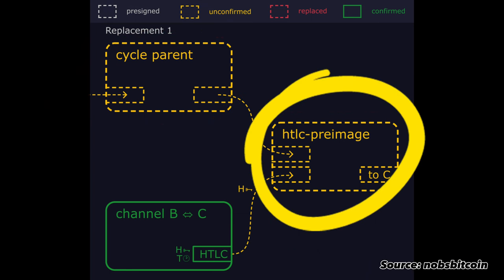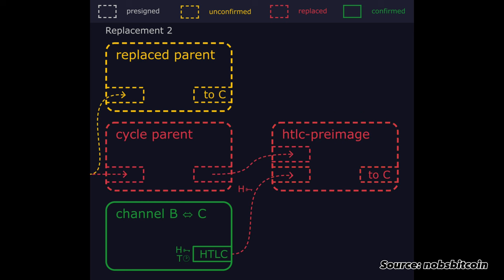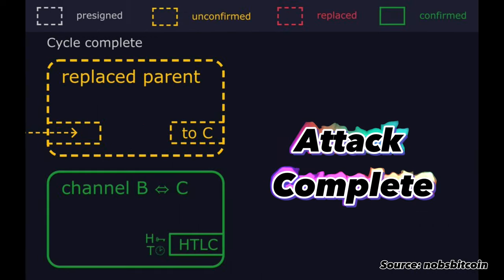Since this HTLC pre-image transaction pays a higher fee rate and spends the same inputs, it replaces both the cycle child and Bob's HTLC timeout transaction in the mempool. If Bob sees this, he can take the pre-image and use it immediately to redeem the incoming HTLC from Alice. So the attackers broadcast a new transaction replacing the cycle parent. The HTLC pre-image depends on that for one of its inputs, so it is also evicted from the mempool.